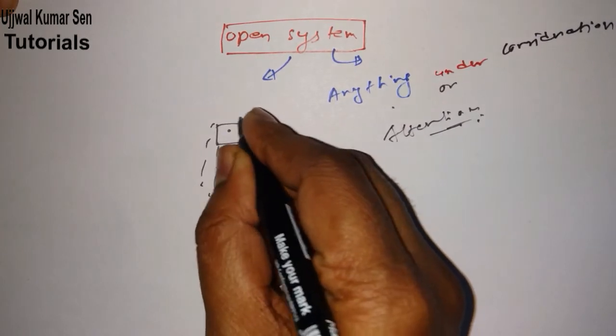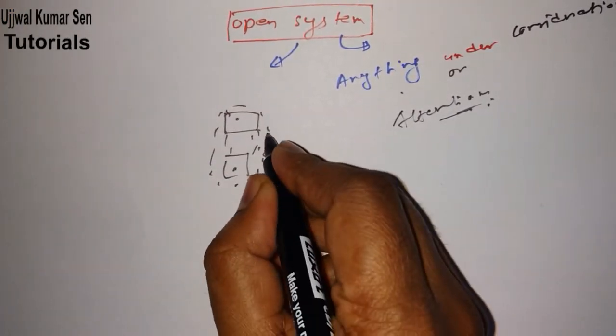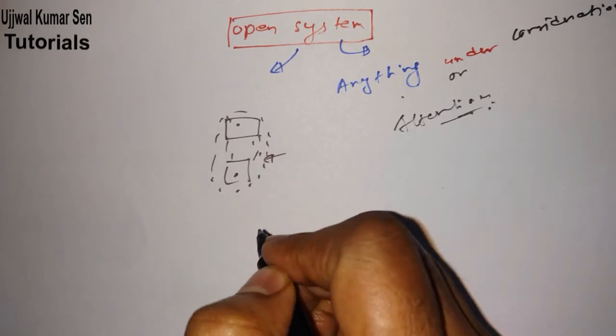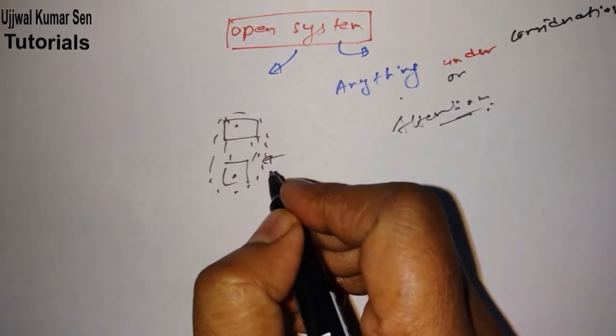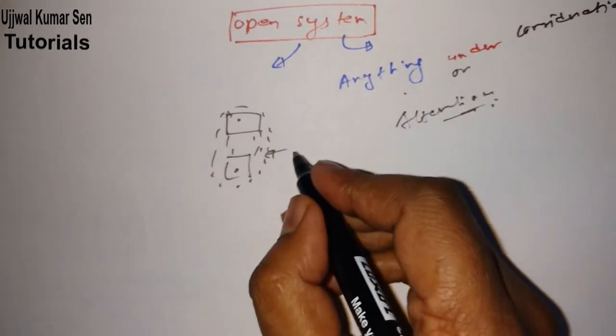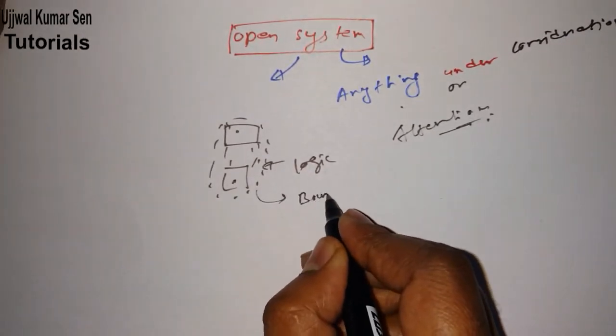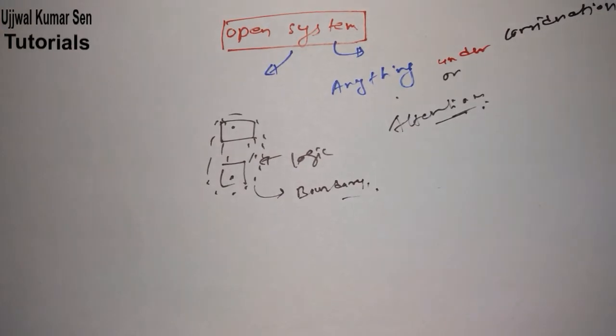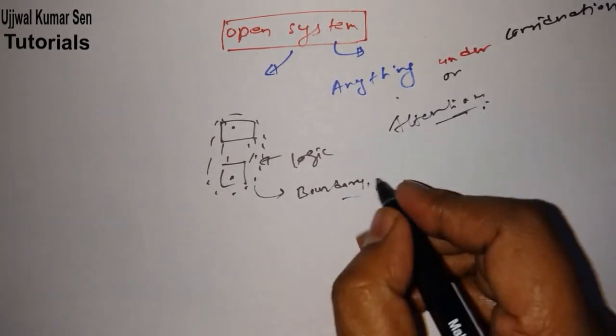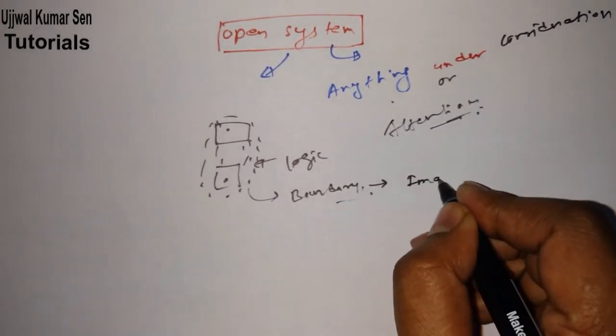Suppose this is a system for you. Why am I denoting it by a dotted line? Is there any logic? Yes, there is logic behind it because this is a boundary, an imaginary boundary.